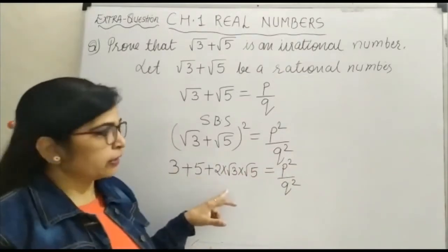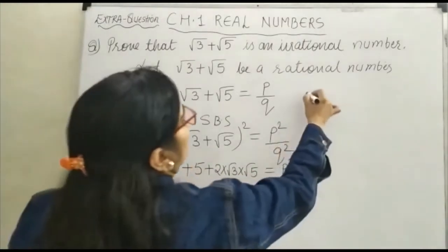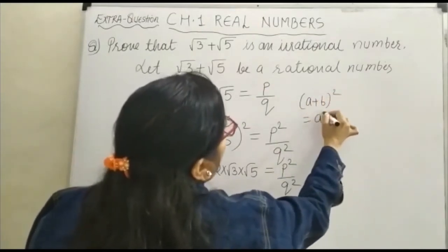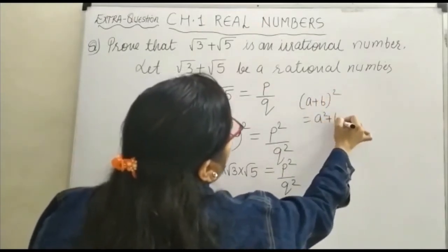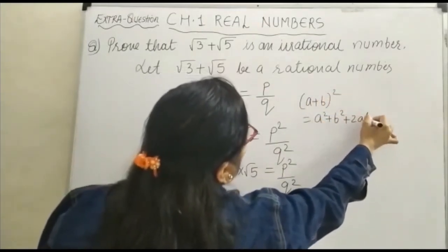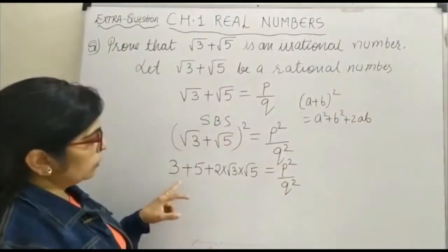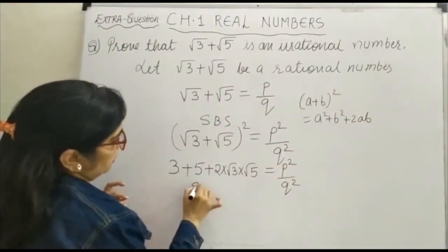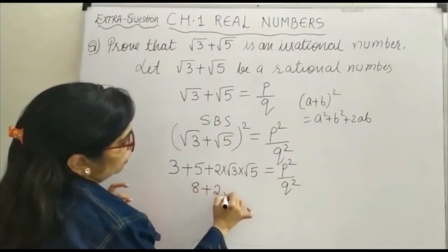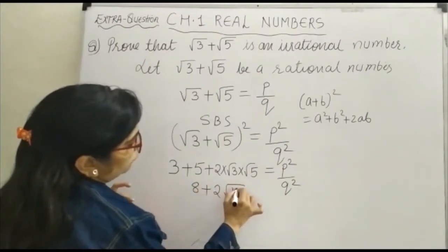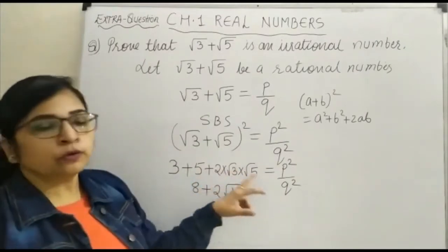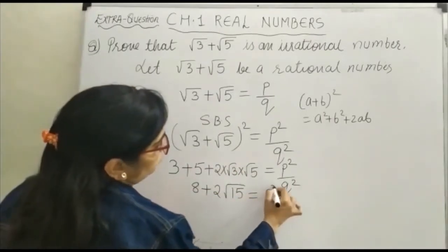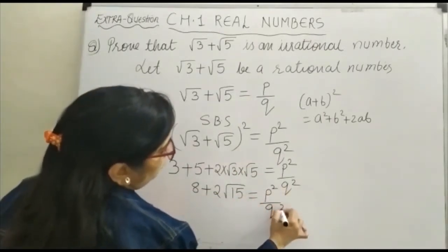I have used the result (A + B)² = A² + B² + 2AB. So what is 5 + 3? It is 8. Therefore, 8 + 2√15 = P²/Q², since √3 × √5 = √15.